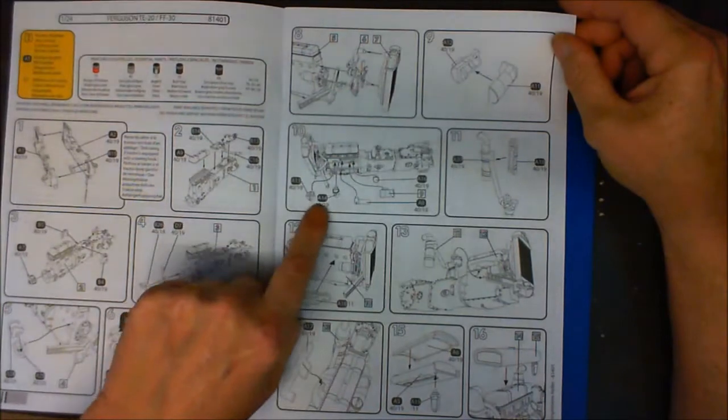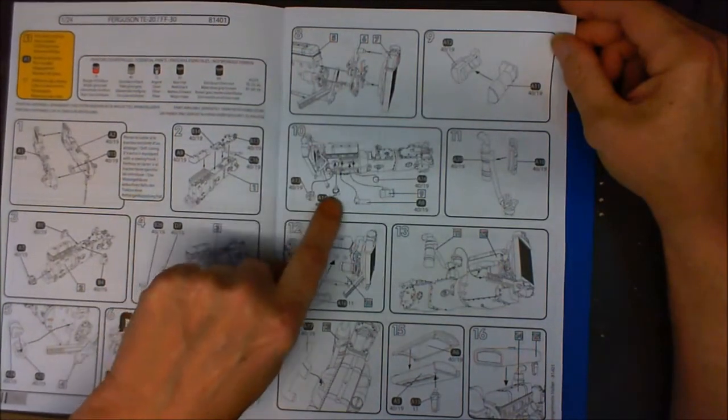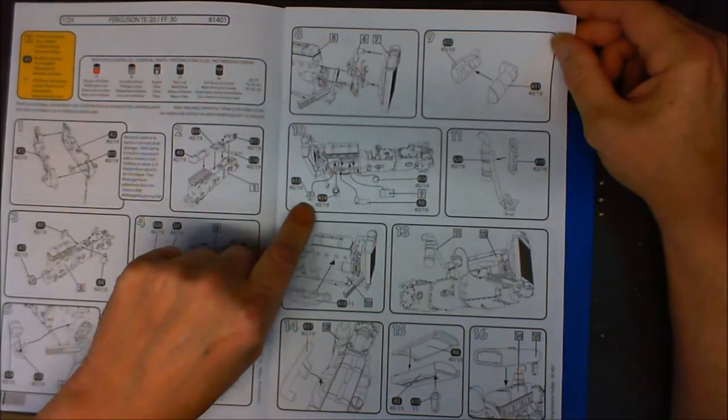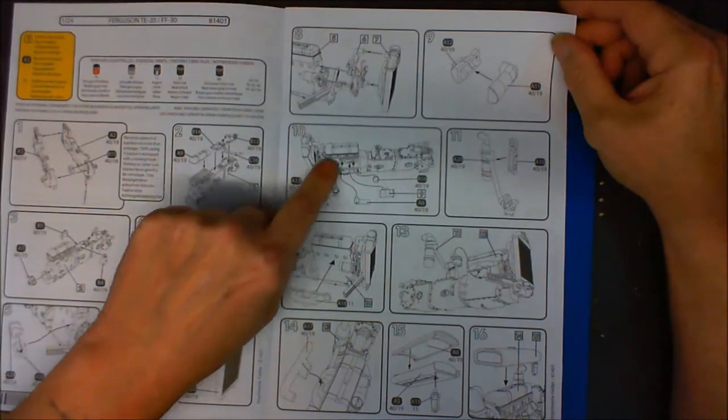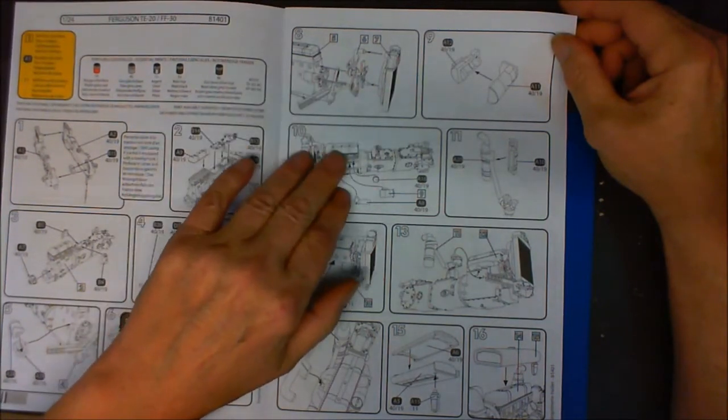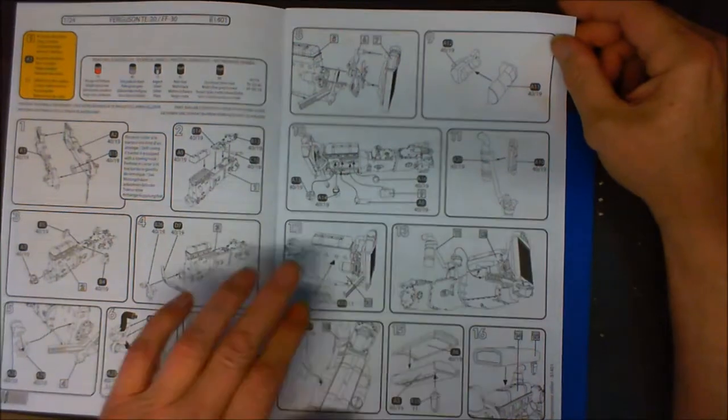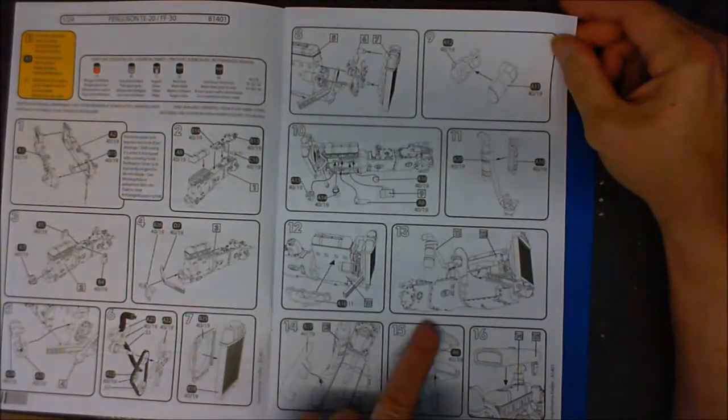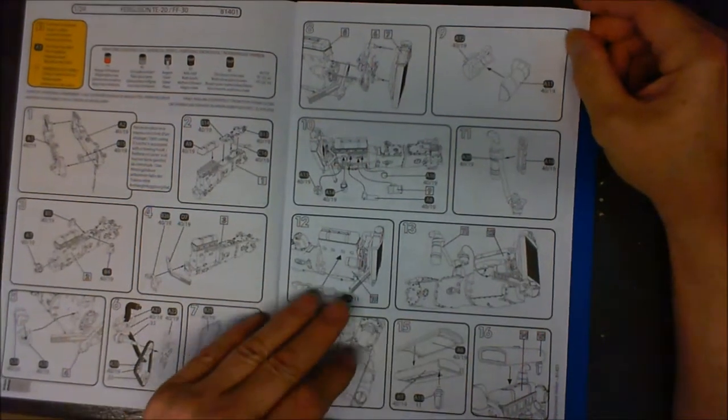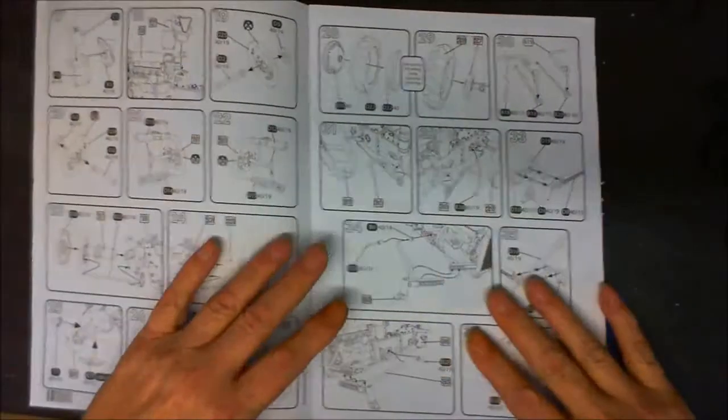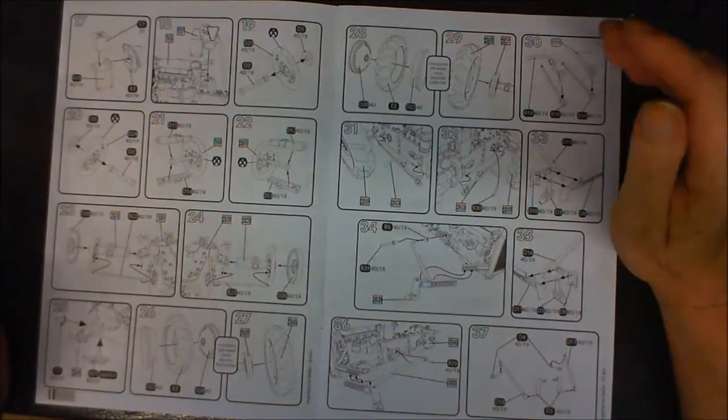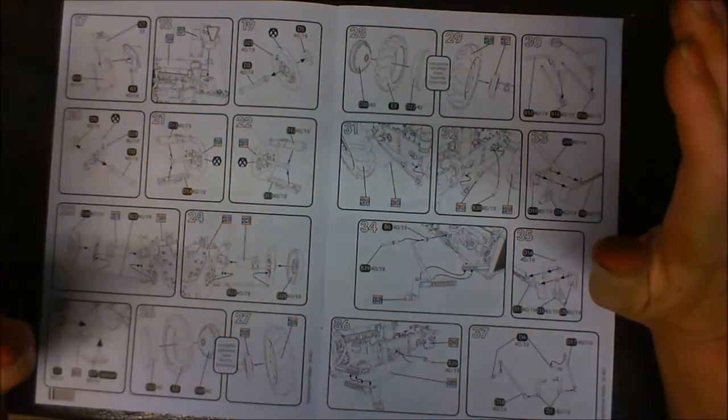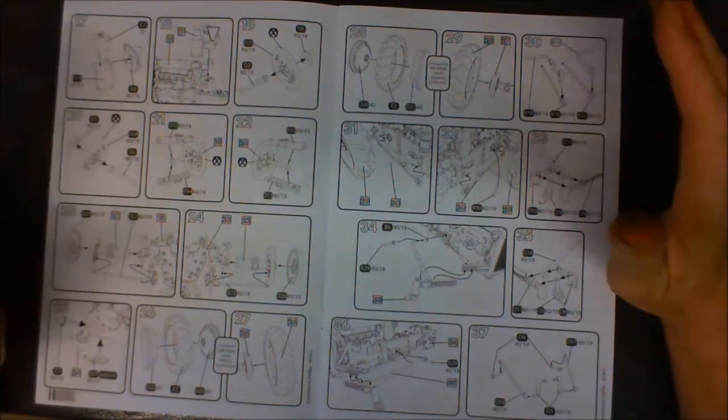Then we've got the radiator assembly. Starter motor. Oil filter, solenoid, and distributor going in. Like I say, this version's a petrol. Air filter. And then we've got the manifolds going on. Fuel tank. Nicely set out. Nice large pictures. Nice, just a few things going on in each picture. That's what I like.